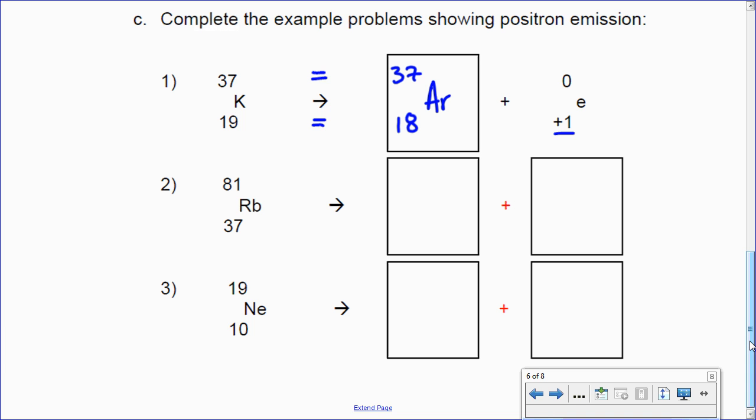Rubidium 81. Mass does not change. Number of protons decreases by one. And we always have to have our 1e positive one for our other particle. We got to find our symbol here. Atomic number 36 is krypton. K-R. Noble gas again.